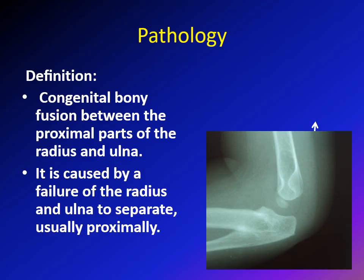Radio-ulnar synostosis is a congenital condition that affects the elbow in kids. There is a fusion between the proximal part of the radius and the ulna. As seen on this X-ray, there is fusion between the radius and the ulna — these are two different bones — and instead of having a joint where they move in relation to each other, they are fused and effectively become one bone.